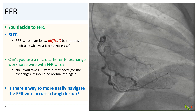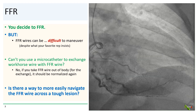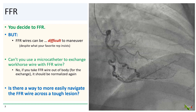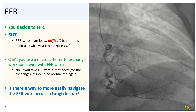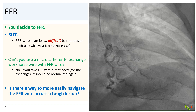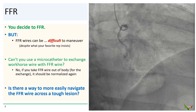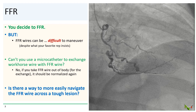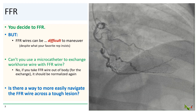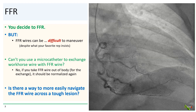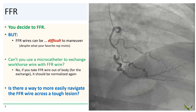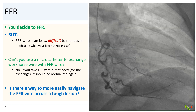We could use a workhorse wire to first get across the lesion, but then what? You can't just use a microcatheter to exchange your workhorse for the FFR wire, because you have to take the FFR wire out of the body after you normalize it and then insert it back into that microcatheter. But once you take the FFR wire out of the body, the normalization could go off and you're back to square one. The FFR wire would need to be re-normalized.